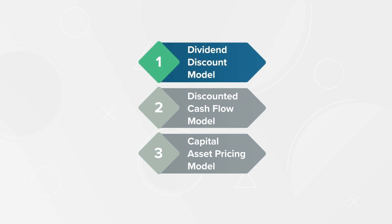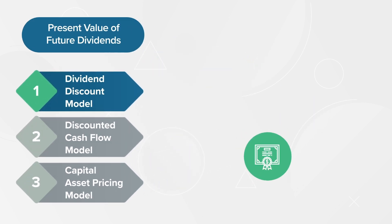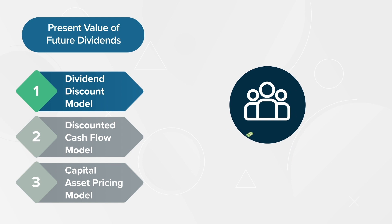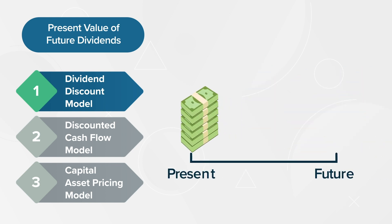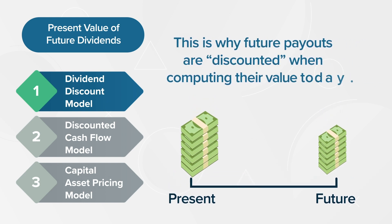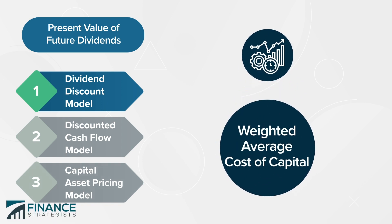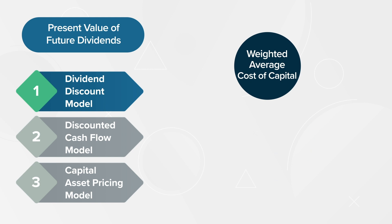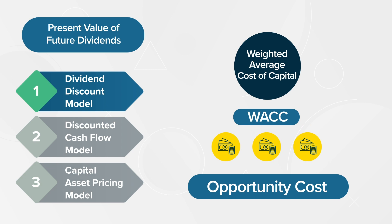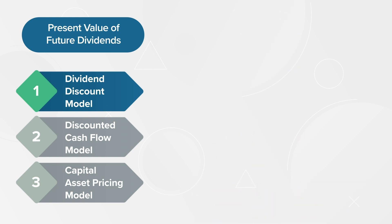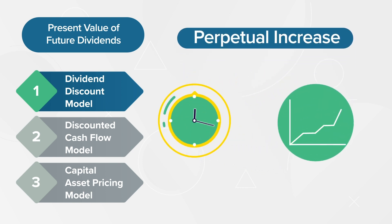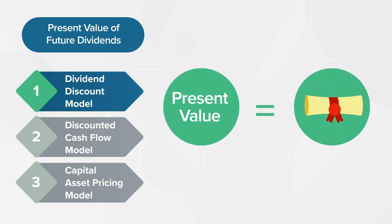The Dividend Discount Model, or DDM, is one of the most common valuation models. This model values a share by estimating the present value of future dividends a stock will pay. Because investors expect to earn interest on their money over time, money today is worth more than the same value paid out at a later date. This is why future payouts are discounted when computing their value today. The rate at which future dividends are discounted is known as the Weighted Average Cost of Capital, or WACC, which is the opportunity cost of what the investor's money could have made if it were invested elsewhere. The DDM also factors in an estimated perpetual increase of the dividend payout made over time based on historical increases of the dividend payout. The present value of future dividends is equal to the estimated value of the stock.